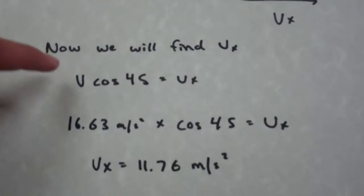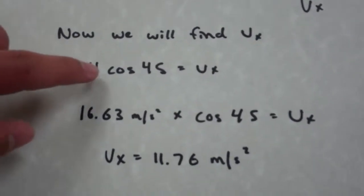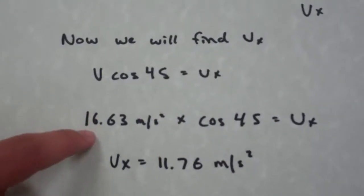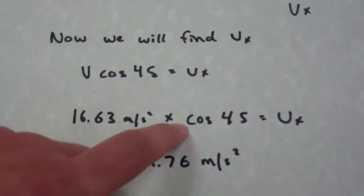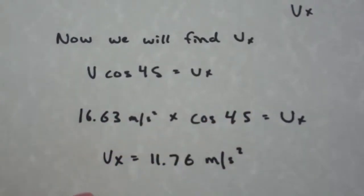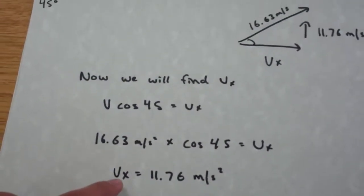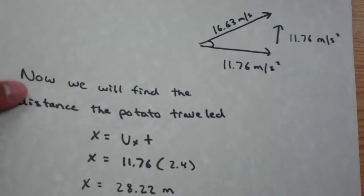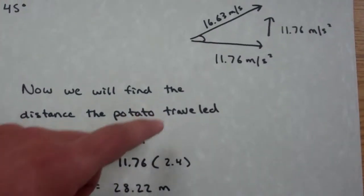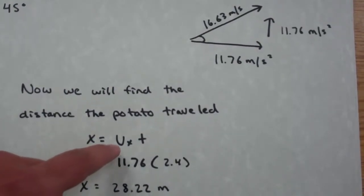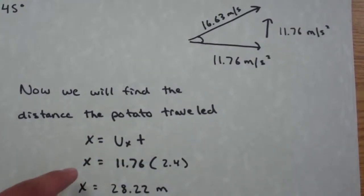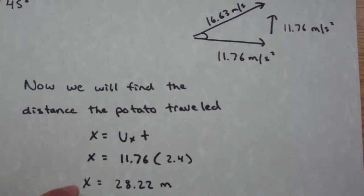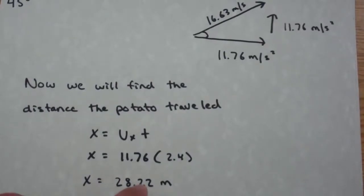Now we will find the horizontal velocity. We take velocity times the cosine of 45 degrees to equal the horizontal velocity. 16.63 meters per second was the velocity, so we multiply that by the cosine of 45. So then we get the horizontal velocity of 11.76 meters per second. To find the distance the potato traveled, we use the distance formula x equals the horizontal velocity times time. The distance equals 11.76 times our time of 2.4 seconds, so we get a distance of 28.22 meters.